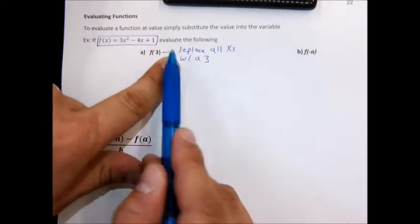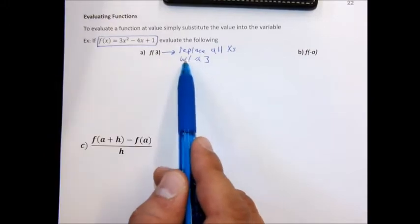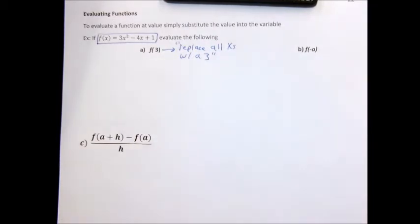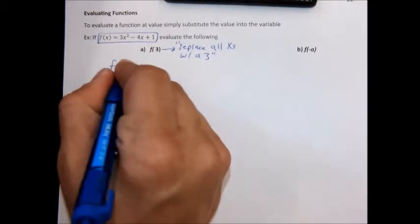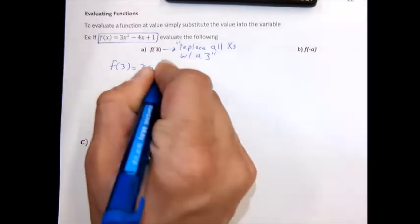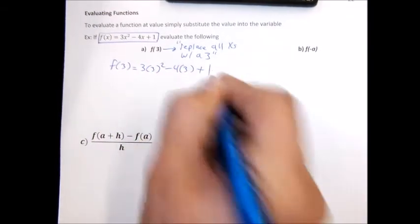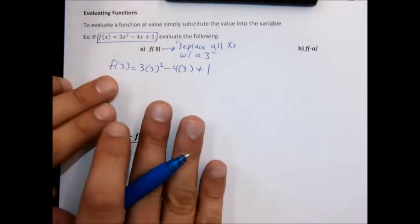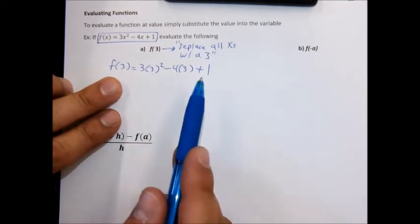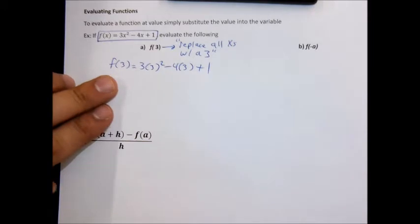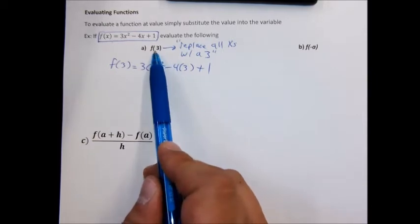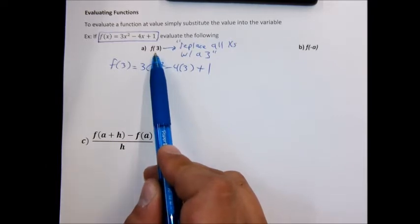This is an important part of the basics — the instructions. Because when we do f of minus a, it's going to have the same instructions. So when we say f of 3, the instructions are: replace all the x's with a 3. When you see f with parentheses and something inside, it means remove the variable and put in whatever's in the parentheses.